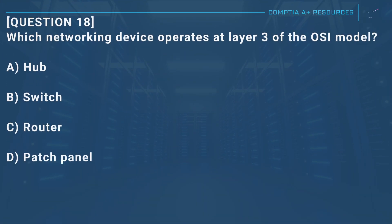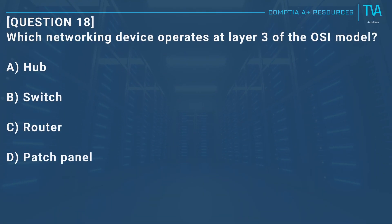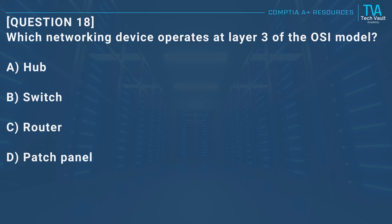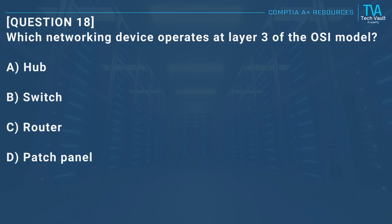Question 18: Which networking device operates at layer 3 of the OSI model? A, hub. B, switch. C, router. D, patch panel.